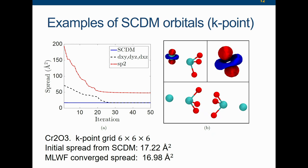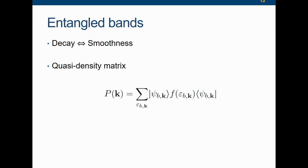If you use SCDM, you can see it's almost a flat line. SCDM is not guaranteed to minimize the spread of the Wannier function, but almost: the initial spread from SCDM, from just one or two lines of code, is already 17.22, while the fully converged Wannier function is 16.98. So you are really almost there, and from there it's just a flat line.